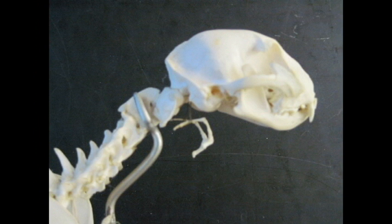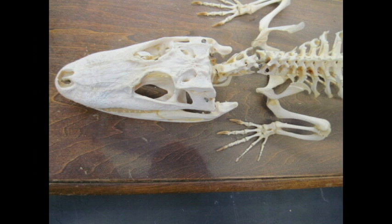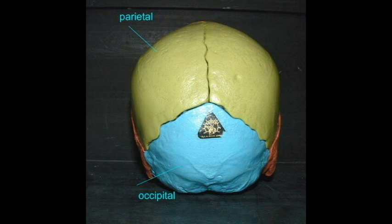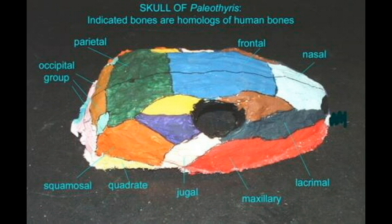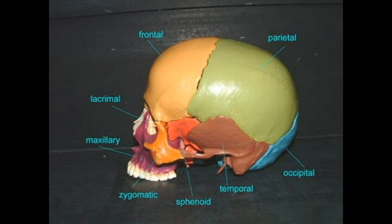Mammals, such as humans, have one large occipital bone. Reptiles don't — they have many small bones in this region. Mammals, such as humans, have one large temporal bone. Reptiles don't — they have many small bones in the temporal region. Mammals, such as humans, have one large sphenoid bone, ethmoid bone, etc.